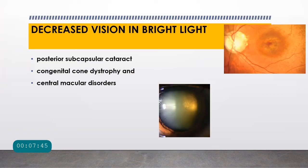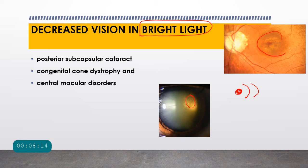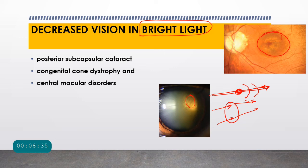Another distinct entity is decreased vision in bright light. In bright light the pupil becomes very small, and if there is a central opacity — whether a central cataract or a central dystrophy like cone dystrophy — light rays pass directly through these opacities and the patient has decreased vision in daylight. At night, the pupil becomes larger and light rays pass through the periphery, making vision possible. The causes of decreased vision in bright light include posterior subcapsular cataract, congenital cone dystrophies, and central macular disorders.